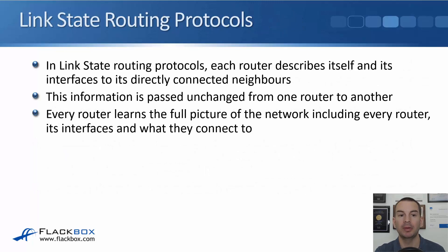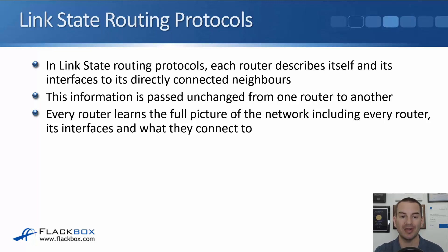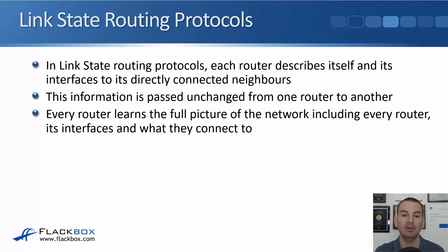We can compare this with link state routing protocols. In link state routing protocols, each router describes itself and its interfaces to its directly connected neighbors. That information is then passed unchanged from one router to another. Every router thus learns the full picture of the network, including every router, its interfaces, and what they connect to.